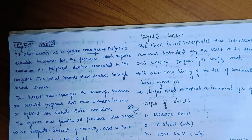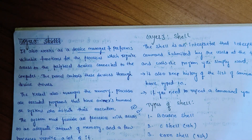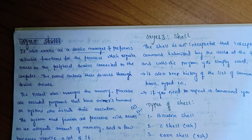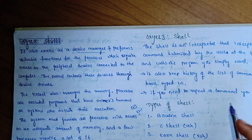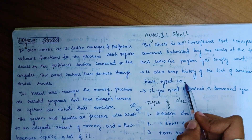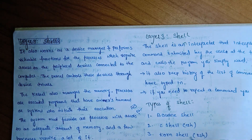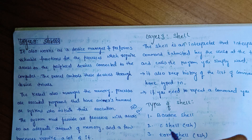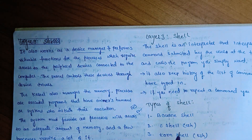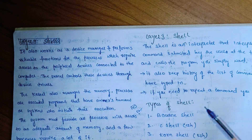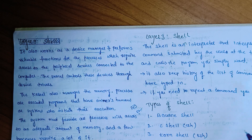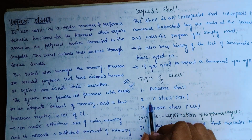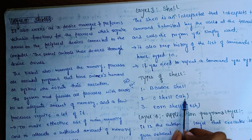Next, coming to the third layer — Shell. Shell is what we call an interpreter. It interprets the commands entered by the user at any terminal. It also keeps a history of the list of commands you have typed in, so if you want to repeat a command you can retrieve it. In the shell there are three types: the Bourne shell (BSH), the C shell (CSH), and the Korn shell (KSH).